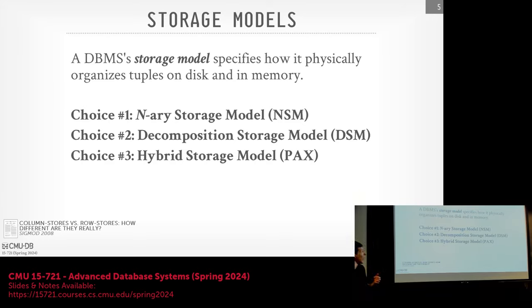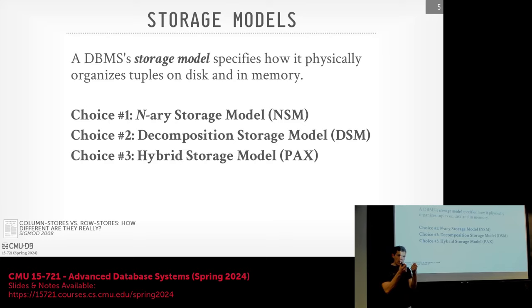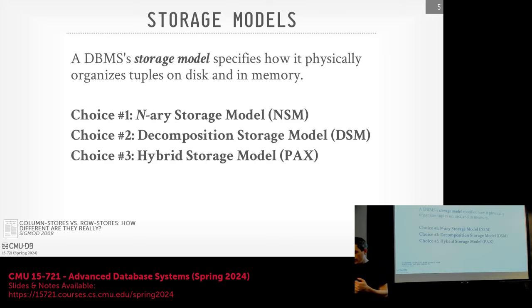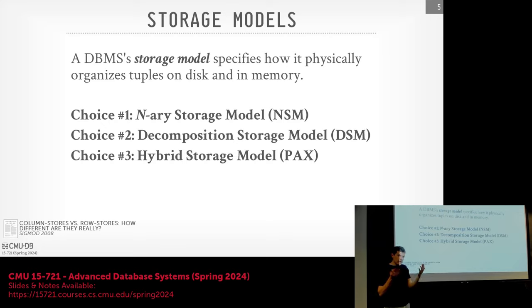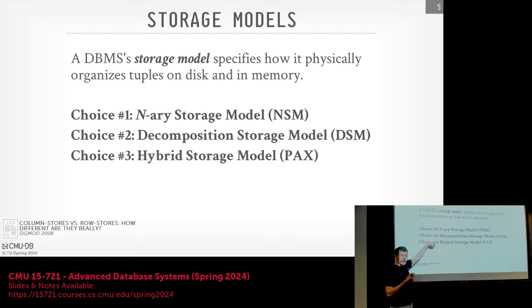The storage model defines how we're physically going to store tuples both on disk and in memory. This is not the actual bytes we're storing — it says here's some tuple, here's some attributes, how should I organize them in relation to both the attributes within the same tuple and then across other tuples. The default storage model in most systems is the N-ary storage model or the row store — this is what BustHub, Postgres, MySQL, SQLite, and Oracle use. The Decomposition Storage Model (DSM) is the pure column store, and then the PAX model will be a hybrid. We'll want to use PAX because we'll have better locality for attributes within the same tuple — they'll at least be in the same block.